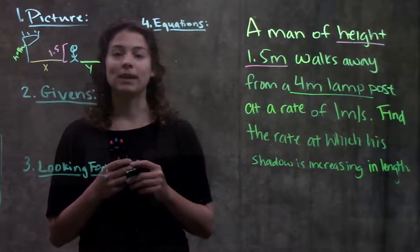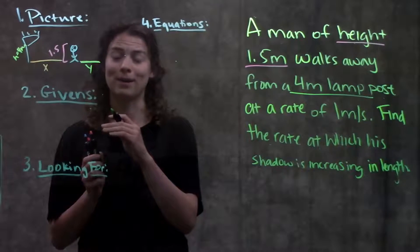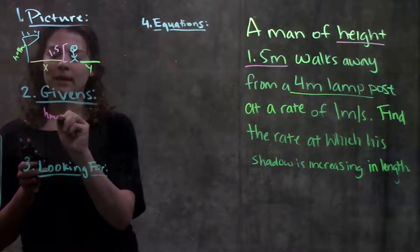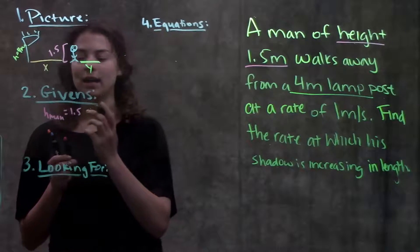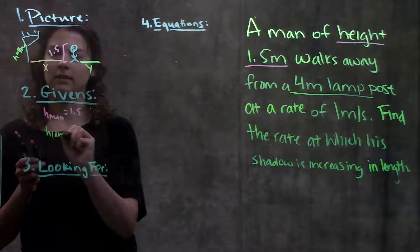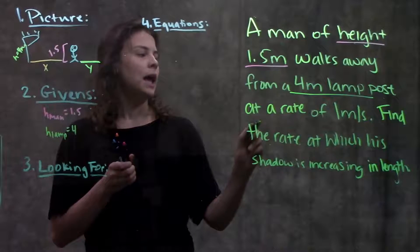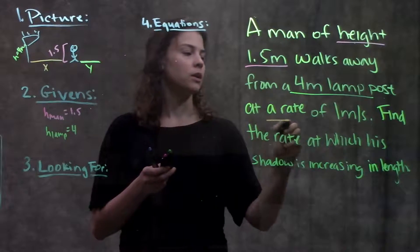Step two I'm just going to write down my givens. So basically what I drew in this picture just now in mathematical terms. So my givens is that the height of the man is 1.5. I also know that the height of the lamppost is 4 meters and also what they told me is that he's walking away at a rate of 1 meter per second.